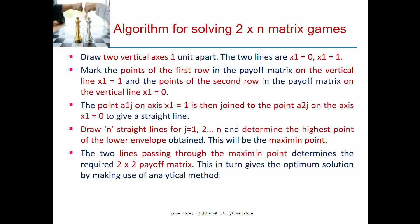After doing this for all strategies of player B, we will get a lower envelope representing the feasible region. From that lower envelope, we take the maximum point because player A always wants to maximize his minimum gain (maximin principle). We then find the 2 lines passing through that maximum point, which determine the required 2×2 payoff matrix, and use the algebraic method to solve the game.